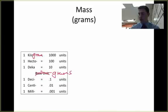This becomes kilogram, and this becomes one thousand grams. So one kilogram is equal to one thousand grams. One hectogram is equal to 100 grams. One decagram is equal to 10 grams.